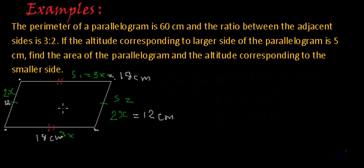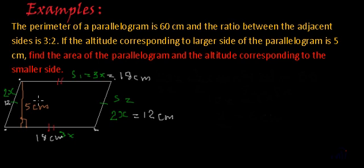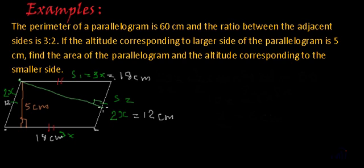We are given that the altitude corresponding to the larger side of the parallelogram is 5 centimeters. The larger side is 18 centimeters. So if I draw a perpendicular from the top vertex down to this line, that length is 5 centimeters. We have to find the area of the parallelogram, and also the length of the altitude corresponding to the smaller side.